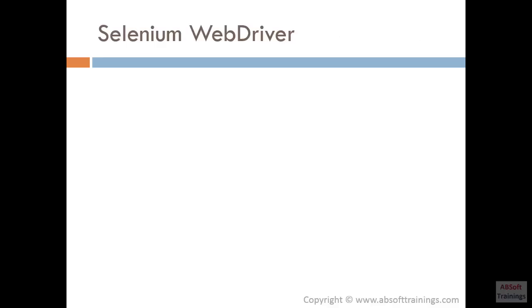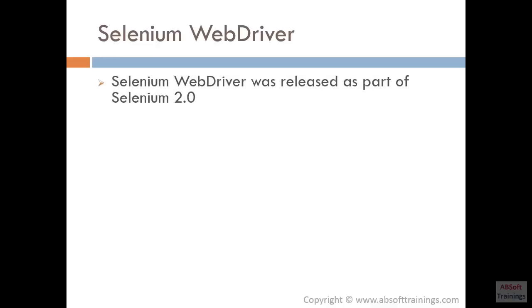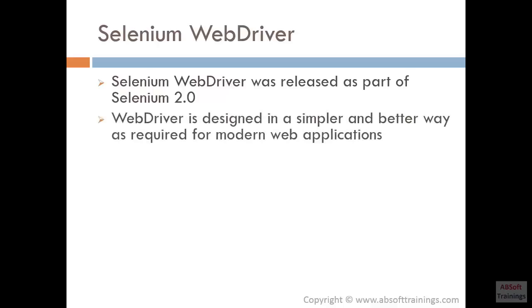Let's first see why we should use Selenium WebDriver in our automation and why it's really powerful. Then we'll see its architecture and how it works in depth and in detail. The actual Selenium automation job — Selenium WebDriver is the main component that you use a lot. It's best and recommended for complete web testing automation. Selenium WebDriver was released as part of Selenium 2.4.